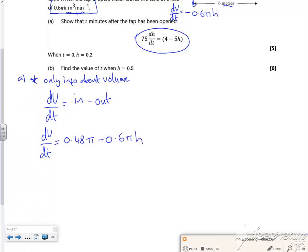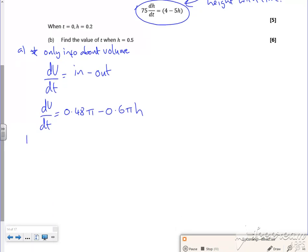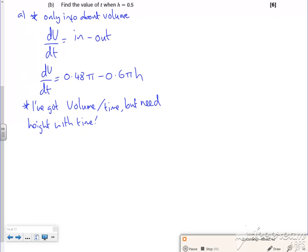Right, that's where we're at so far. Look at this though, this is height with time. I've got volume with time. I've got volume with time, but need height with time. I need to change this dV by dT somehow, or I need to find dH by dT anyway.